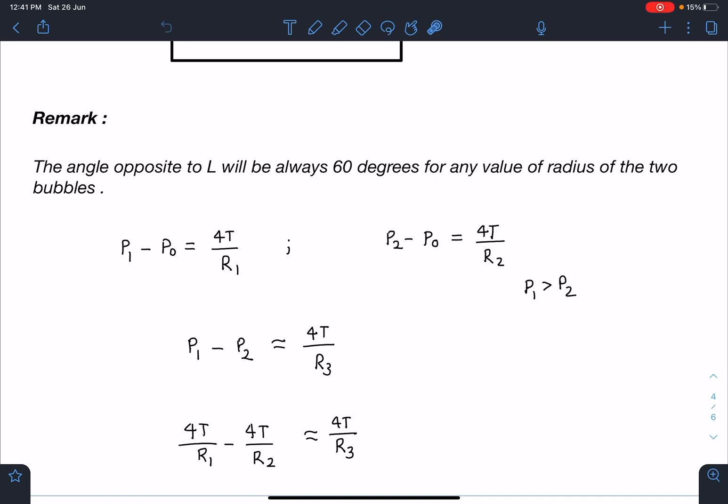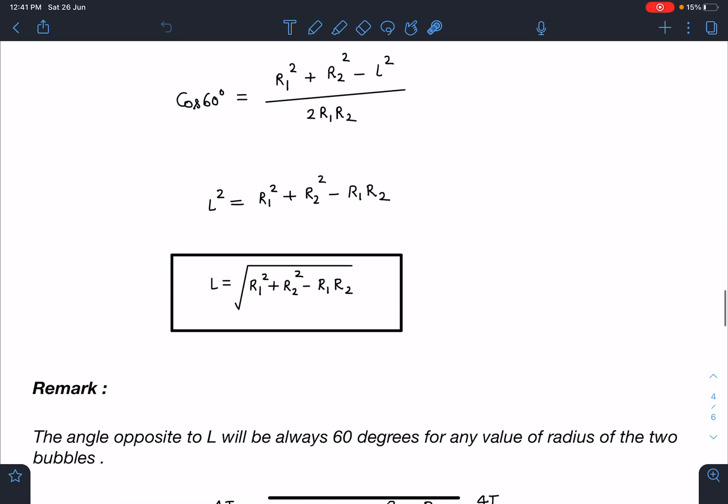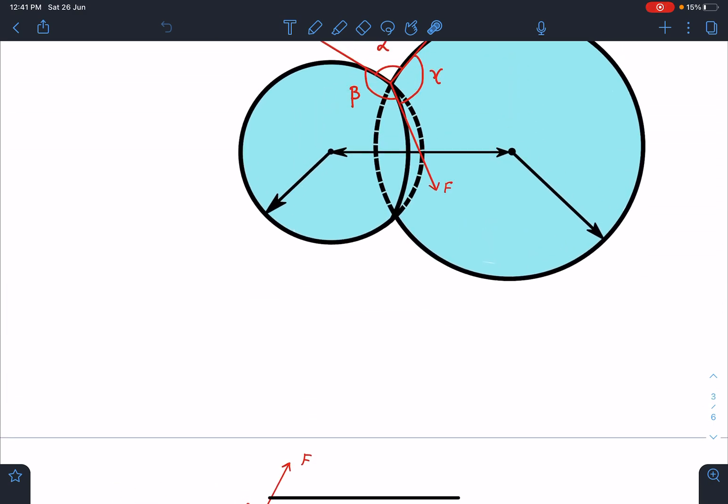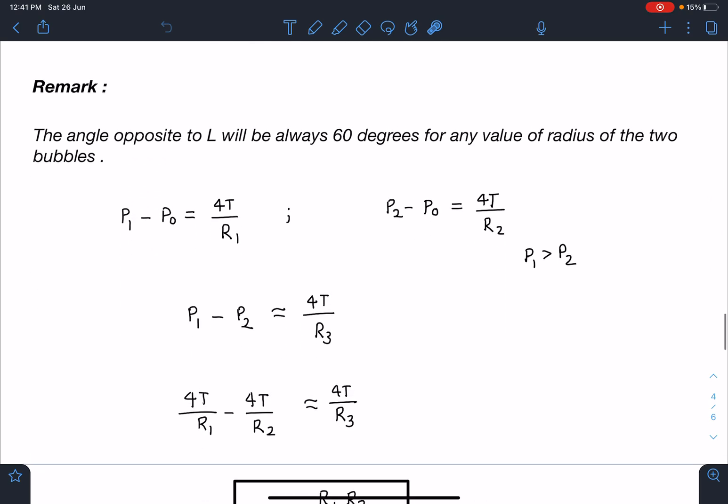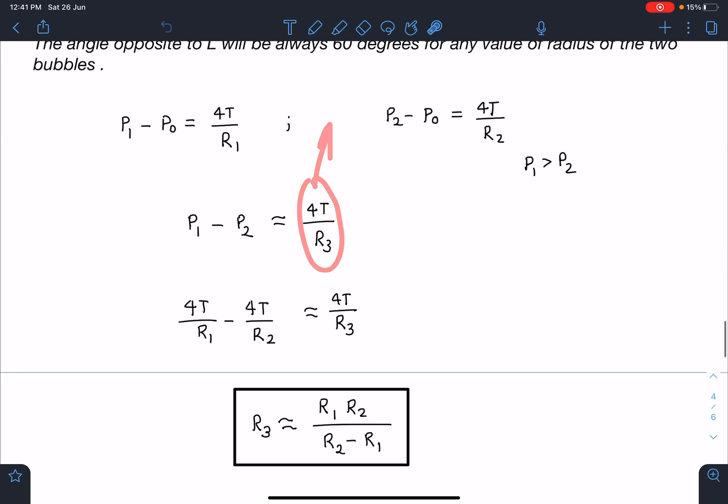Now about the radius of the third one, so here we are solving it under some assumption. Expression in first one, if we write, P1 minus P0 is equal to 4T by R1. Similarly P2 minus P0 is equal to 4T by R2. Now when this next surface will come, see their pressures may change slightly but that change is negligible. So I can say now pressure here is P1 and here it is P2, so P1 minus P2 will be 4T by the new radius of curvature.